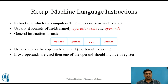An instruction usually consists of many fields, with one field namely the operation code or opcode. The opcode tells the CPU which operation has to be performed. The remaining fields are called operands. The general instruction format has the first field as the opcode and the remaining fields as operands. Usually one or two operands are used for 16-bit computers, and if two operands are used then one of them should involve a register.